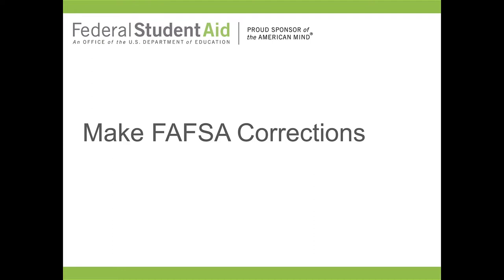One of the reasons why you would need to make a FAFSA correction is because you want to put in more schools. If you want to add more schools, first you need to wait until you get that email from the school saying they have processed your FAFSA. That has to come from the individualized school. You will get an email from FAFSA stating it's processed, but each school then has to download it, and as soon as they have, they'll let you know — that's when you can go back in and add more schools.